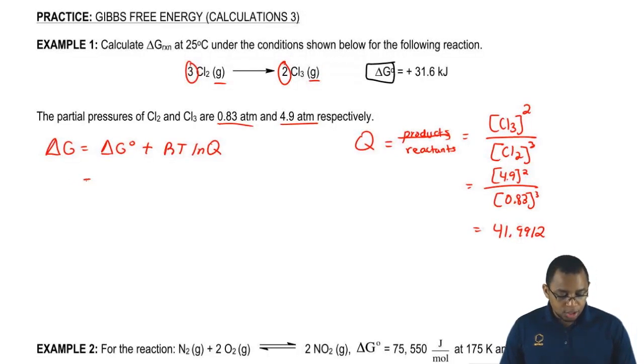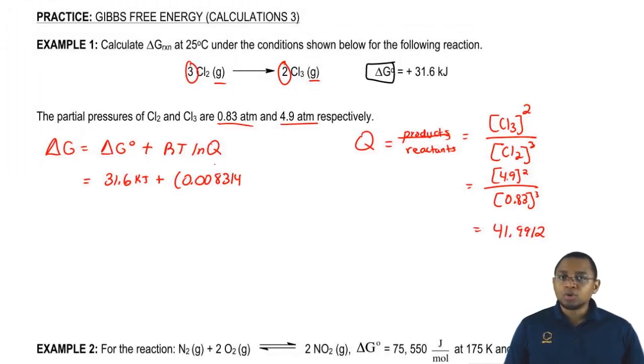We're going to say now delta G is 31.6 kilojoules plus 0.008314 kilojoules over Kelvin times moles. Temperature here will have to be in Kelvin, so add 273.15 to our 25 degrees Celsius. That gives us 298 Kelvin and ln of 41.9912.